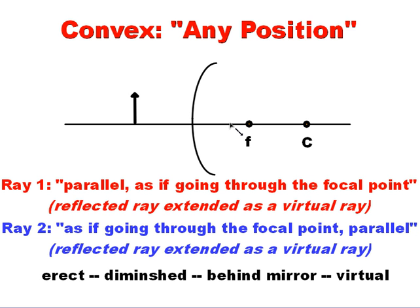It's going to start off going parallel, parallel, and then it is going to reflect in a way so that it would go through the focal point if that mirror wasn't there. So it's going to reflect back like that, so it would go through the focal point if the mirror wasn't there. The second one is going to aim at the focal point. So it's going to sort of try to go to the focal point, but unfortunately that mirror is going to be in the way, and then it'll go back parallel like that.